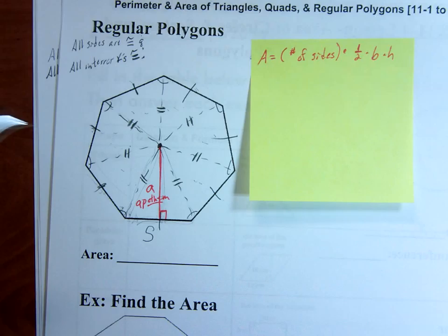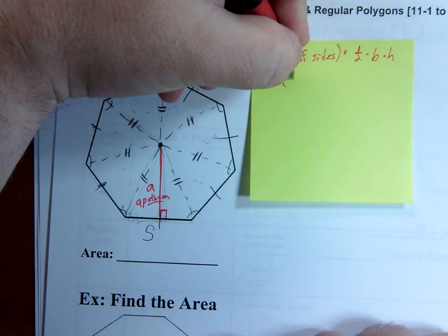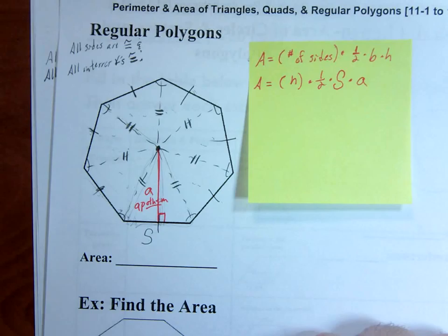So we're going to rewrite this equation with our new pieces in place. So, again, area is equal to, and this time I'm just going to use n for the number of sides, right? n is the number of sides, times 1 half. And now instead of base, b, I'm going to use the letter s. And instead of height, I'm going to use the letter a.